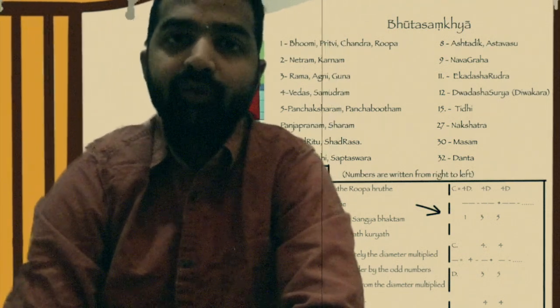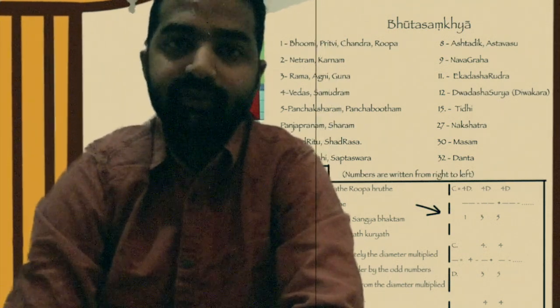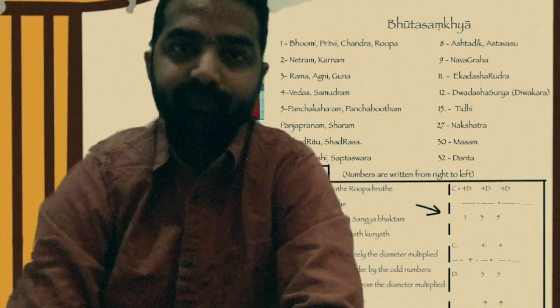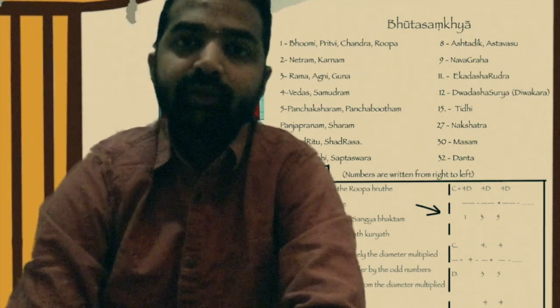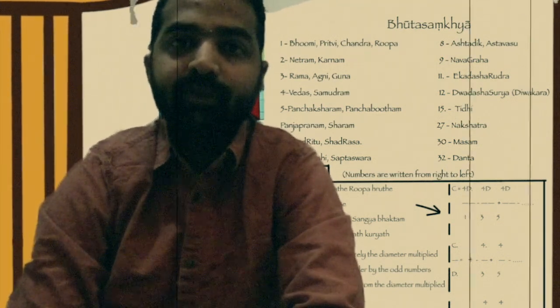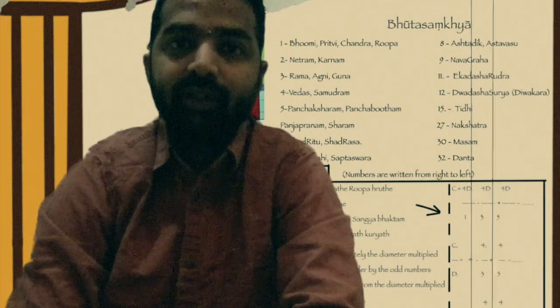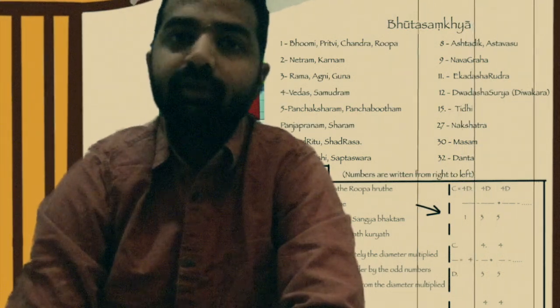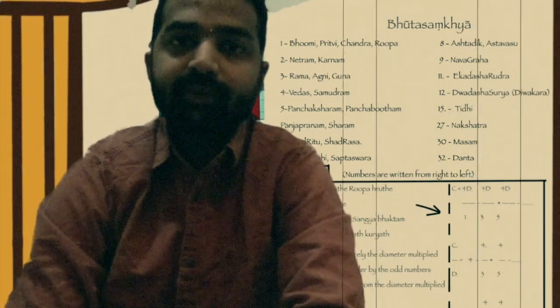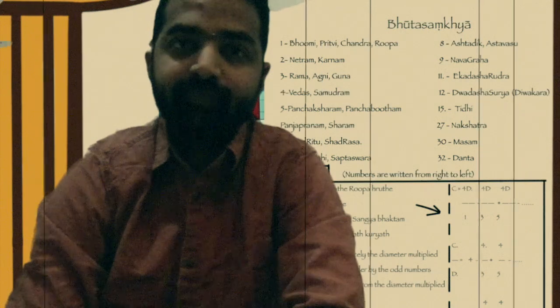Rishi — we know we have got Sapta Rishis. So, Rishis represent number 7. Swaras — we know we have got Sapta Swaras: Sa, Ri, Ga, Ma, Pa, Dha, Ni. So, Swaras represent number 7.